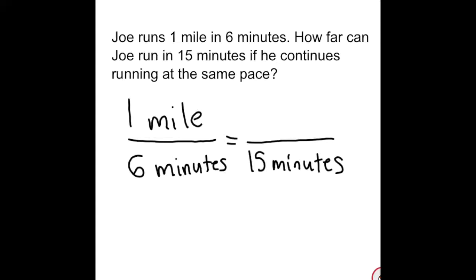Now that I have all the information thrown in, I can place x for the unknown miles. Since we already know what the unit is going to be, I can put in miles as well. So now I can do cross multiply and divide.